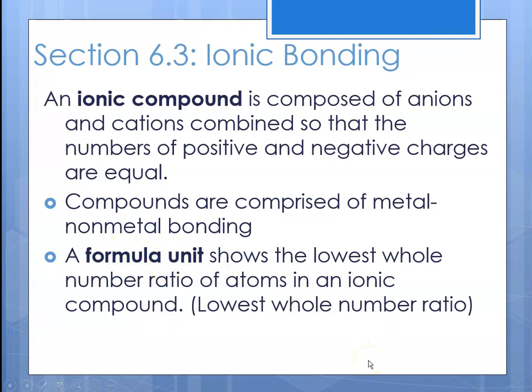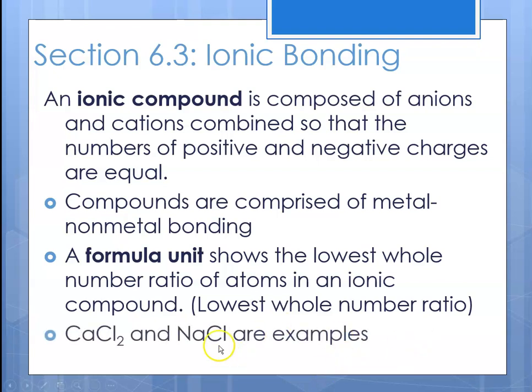We represent ionic bonding using something called a formula unit, and it shows the lowest whole number ratio of the atoms in an ionic compound. When we talked about covalent compounds, we used a molecular formula. For ionic compounds, we use a formula unit, and it shows the lowest whole number ratio of anions to cations. For instance, CaCl₂ is the formula for calcium chloride, and NaCl is the formula for sodium chloride.